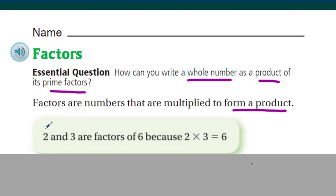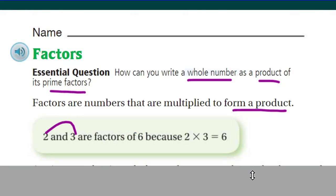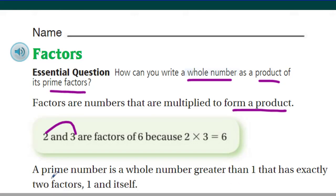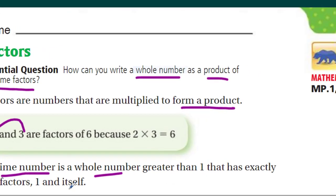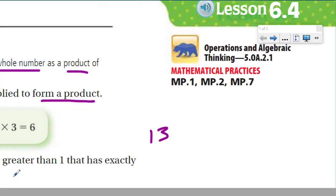Factors: two and three are factors of six because two times three is six. Pretty simple. Now, a prime number is a whole number greater than one that has exactly two factors — one and itself. For example, thirteen: I multiply it with one and I get thirteen. It has exactly two factors, and there are no more factors you could multiply to get thirteen. Therefore, we say that thirteen is a prime number.